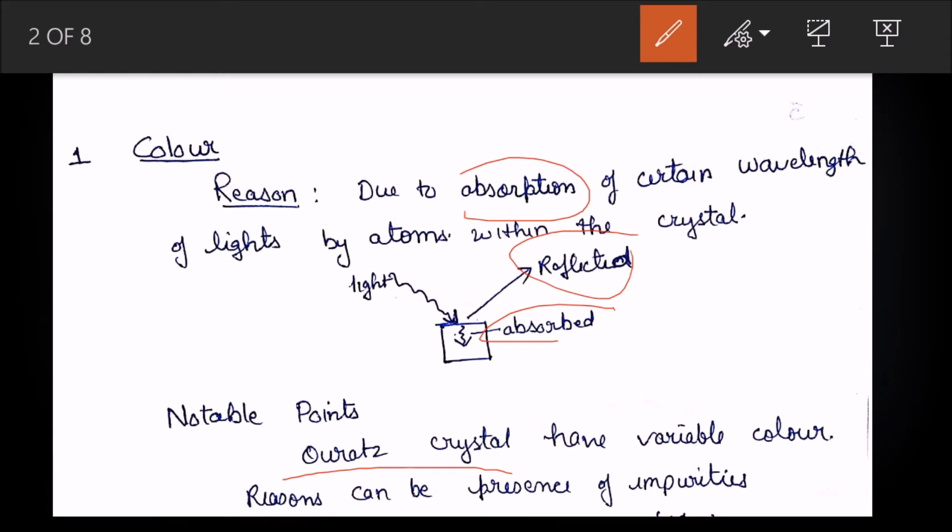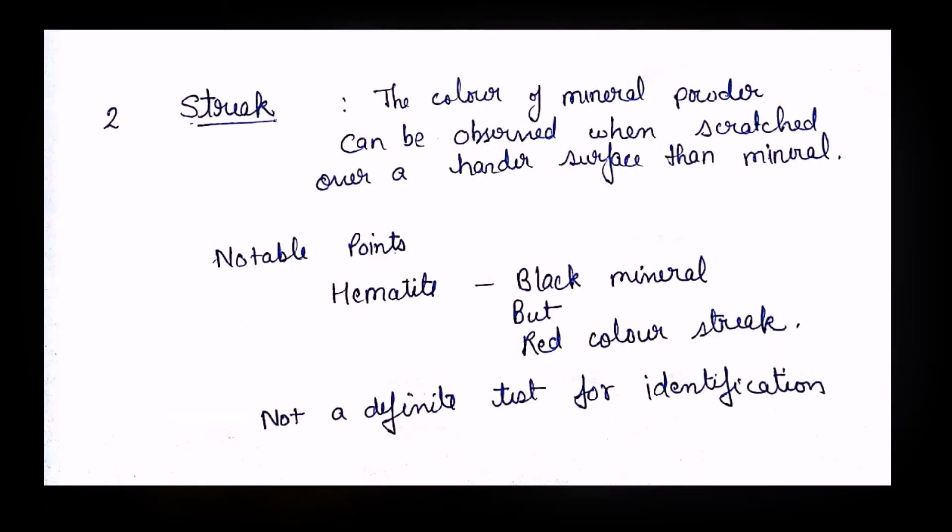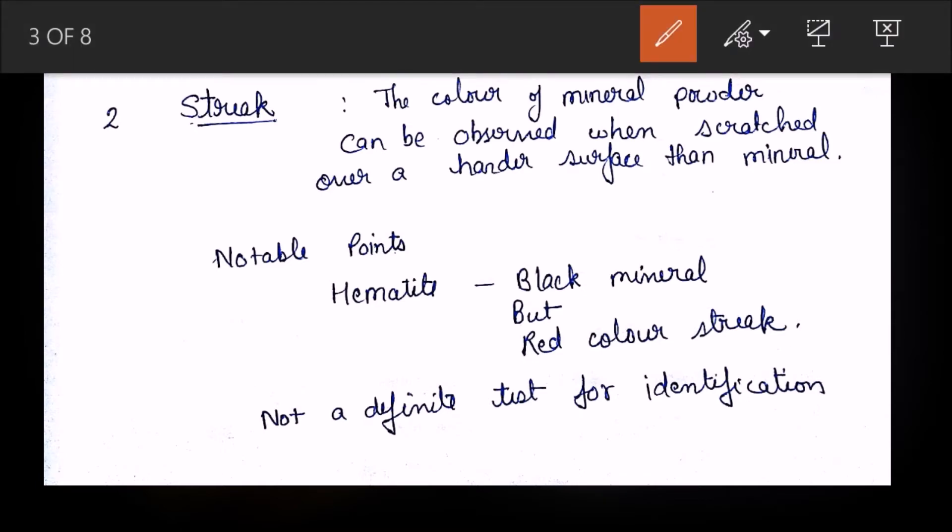Next is streak. Streak is when we rub a mineral against a harder surface, harder than the mineral itself, and it produces a powder, mostly white, which is called streak. Hematite is the most notable example - it is a black mineral but its streak is of red color. However, this is not a definite test because most colorless minerals give a white streak, so on the basis of this you cannot identify it. This is distinctive for hematite.